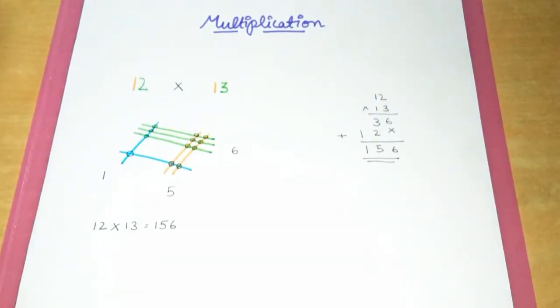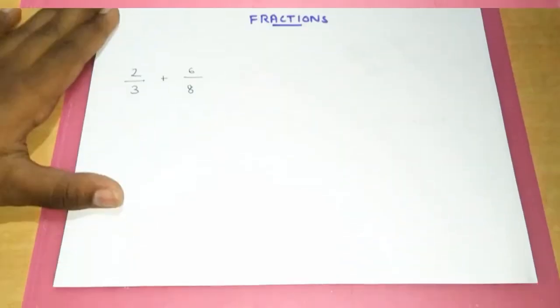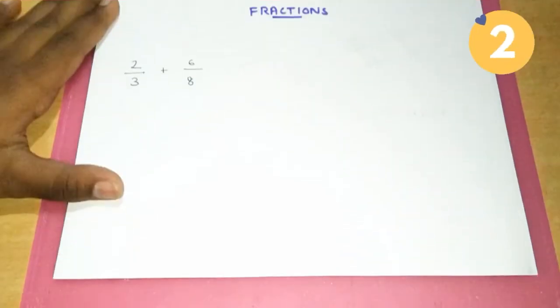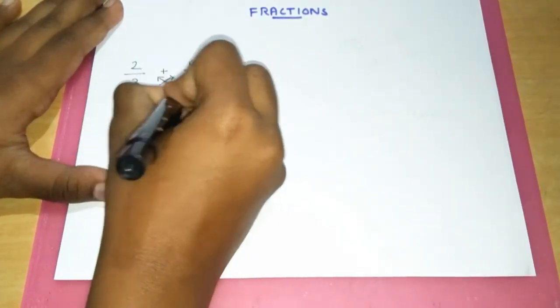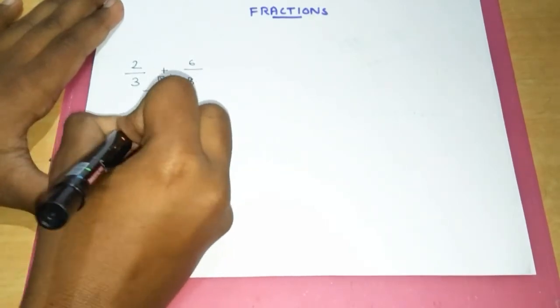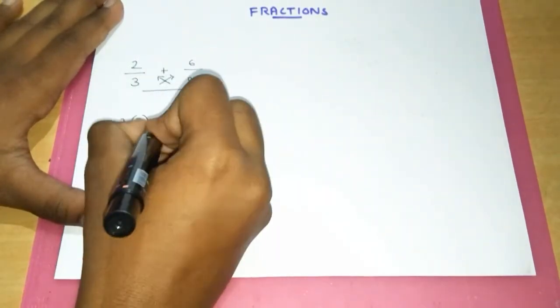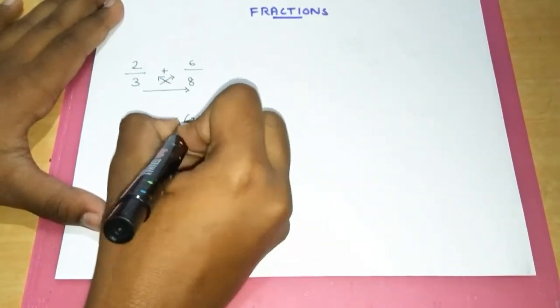The easiest way to add and subtract fractions is here. You don't have to take LCM at all. Instead, cross multiply. That is, multiply 8 in the denominator with 2, and 3 with 6, and also don't forget to multiply 3 and 8.